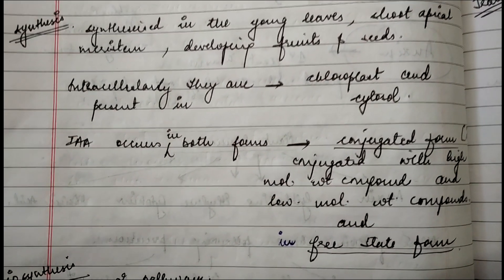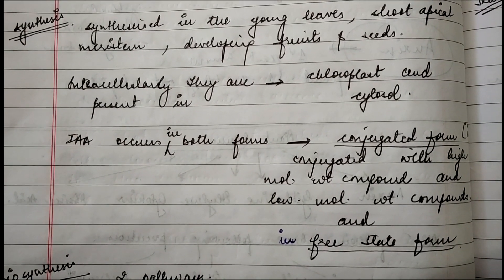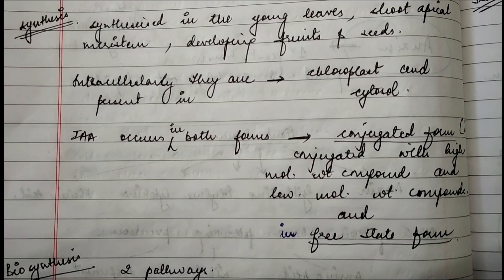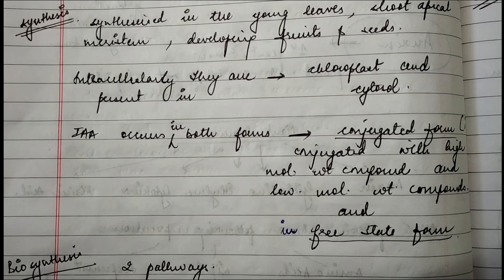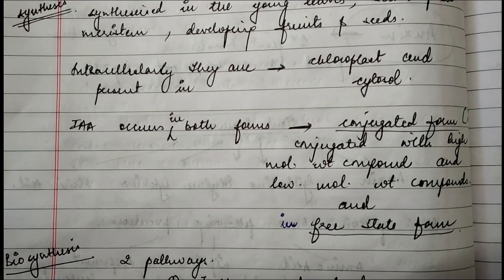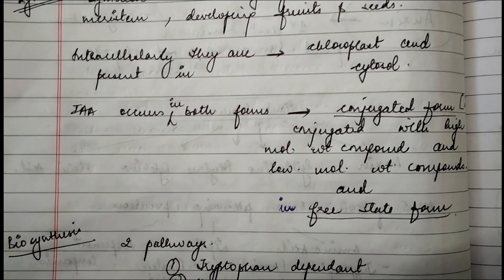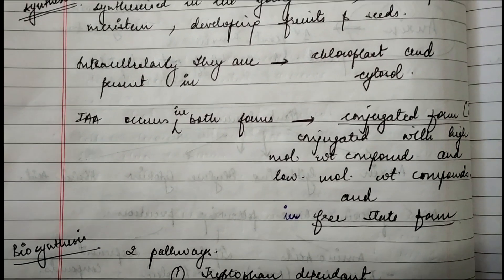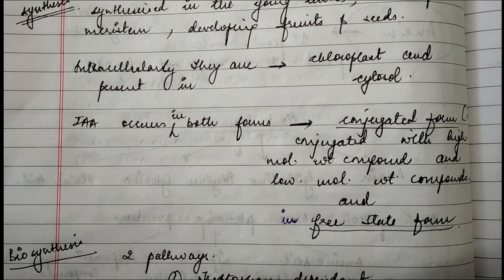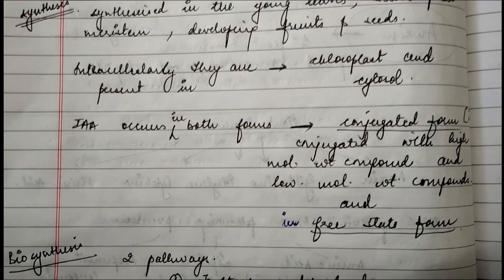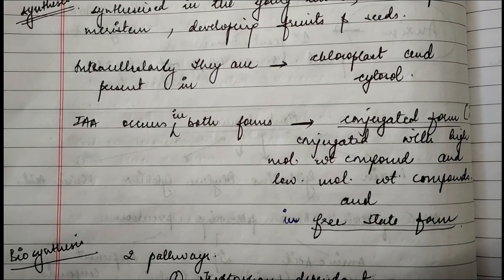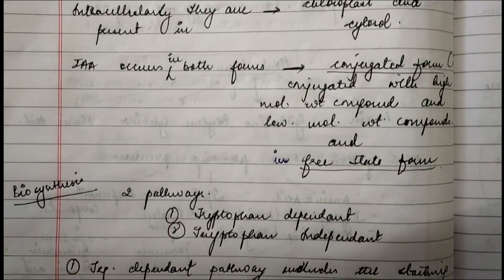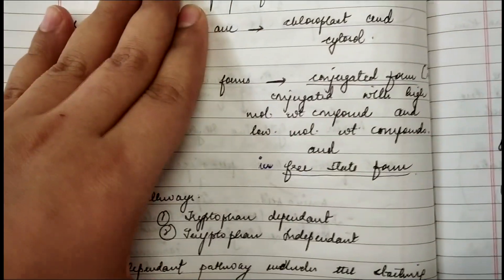IAA — indole-3-acetic acid — occurs in two forms: conjugated form and free state form. In the conjugated form, IAA is attached on either side to high or low molecular weight compounds. In the free state form, it exists freely with no attachment from any side.